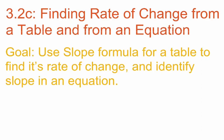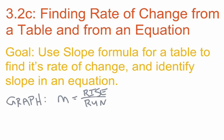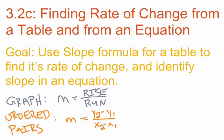Thinking back to our first two lessons on 3.2: in the first part we were finding rate of change from a graph using m equals rise over run. In the second lesson, 3.2b, we were finding rate of change from two ordered pairs using m equals y2 minus y1 over x2 minus x1. With today's lesson, we get to our third way of representing a line, and that's going to be with a table. With a table, we're going to use a third formula.